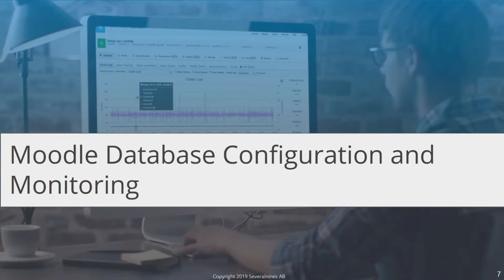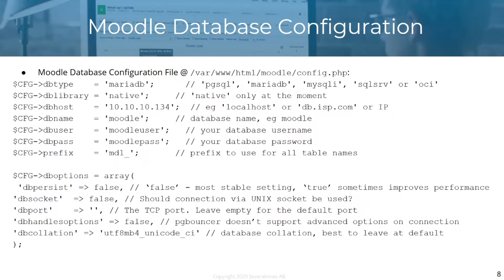For database configuration, you need one file. Moodle has in its directory a configuration file named config.php. In the configuration file you see a lot of options — the database type, the database library, database host, name, user, password, and more.